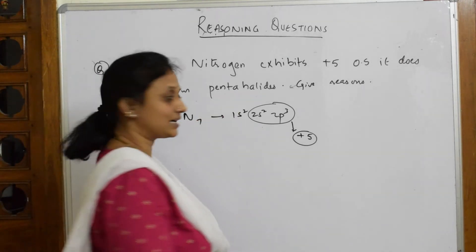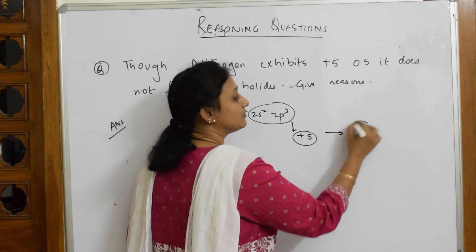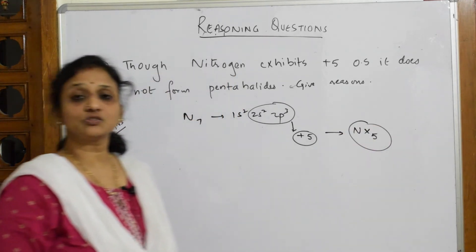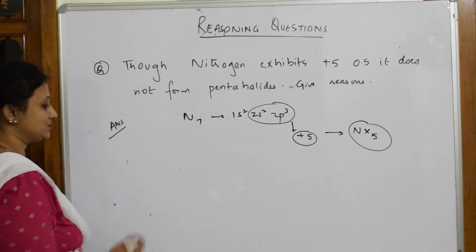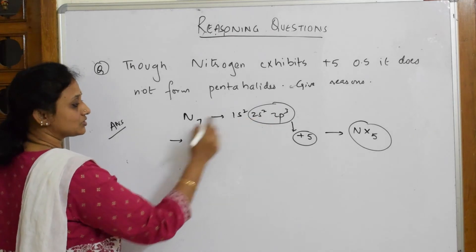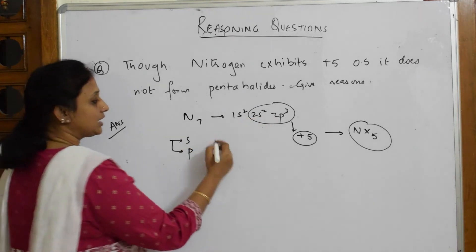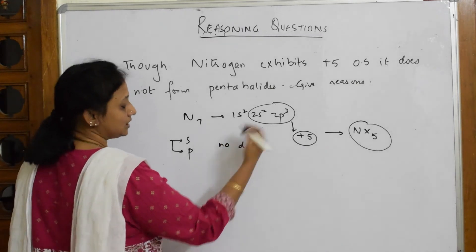Why is it not forming pentahalides? Let's see the reason. When I see the configuration, nitrogen has s as well as p electrons, and it doesn't have d electrons or d orbitals.